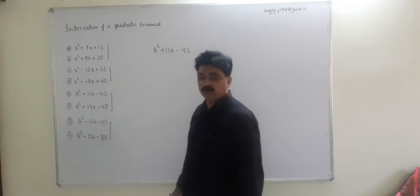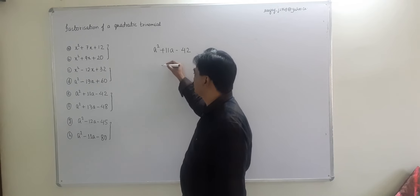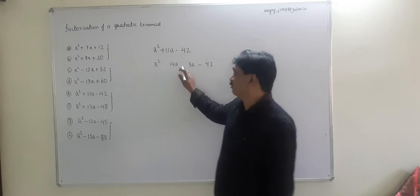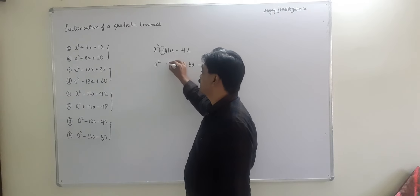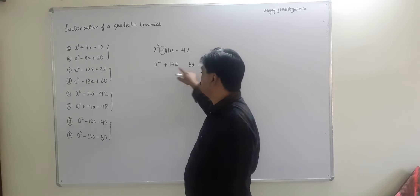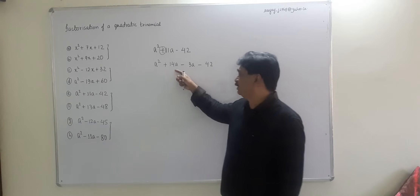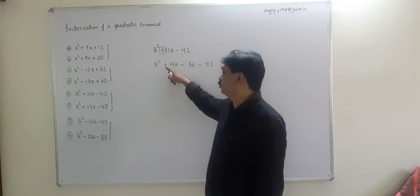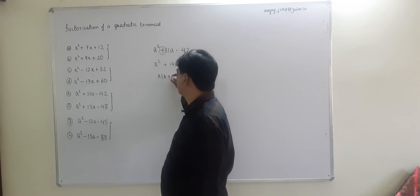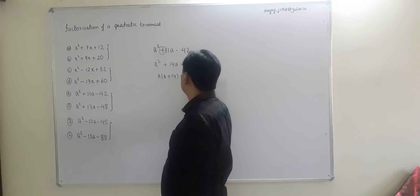14 × 3 = 42 and 14 - 3 = 11. The positive sign is always given to the larger number. So: +14a - 3a. Then a(a + 14) - 3(a + 14) = (a + 14)(a - 3).